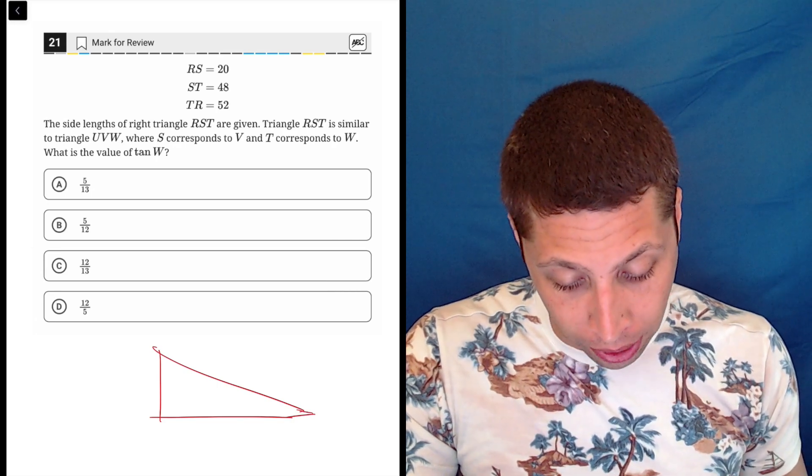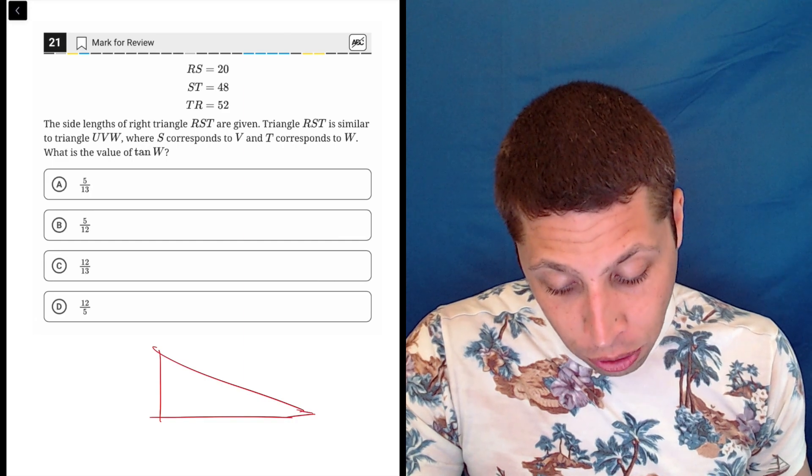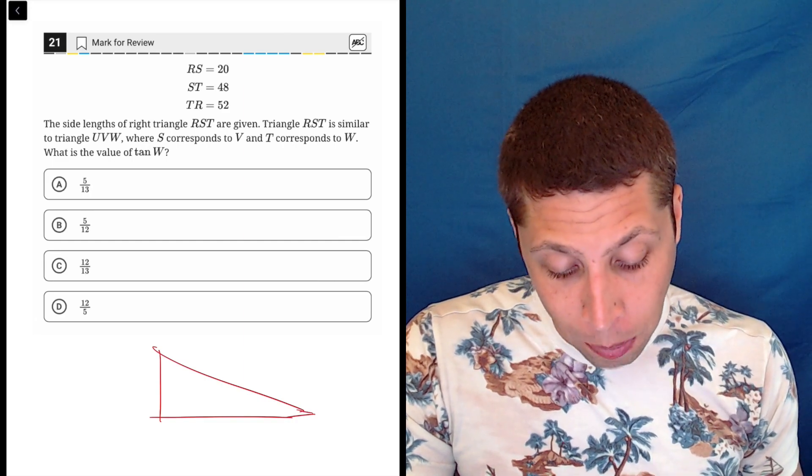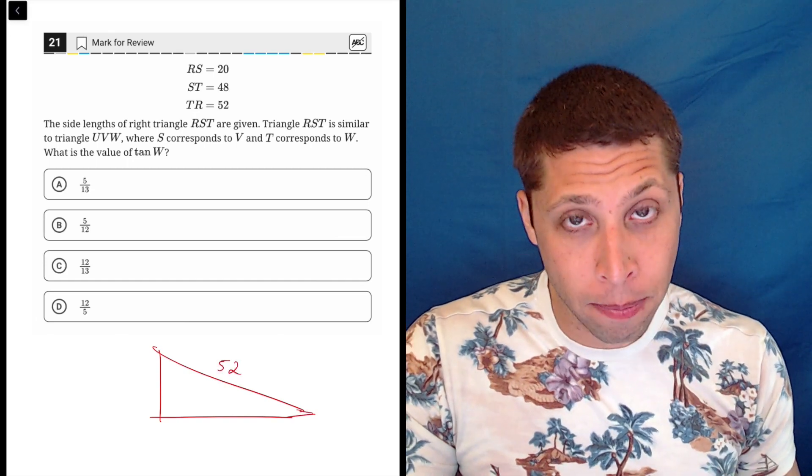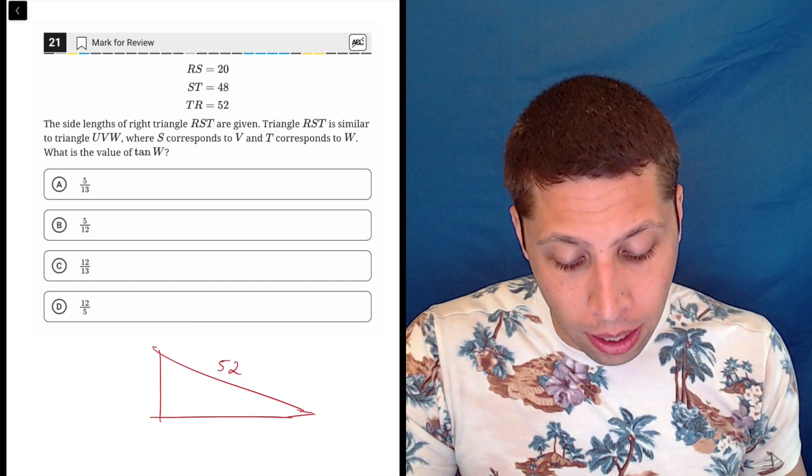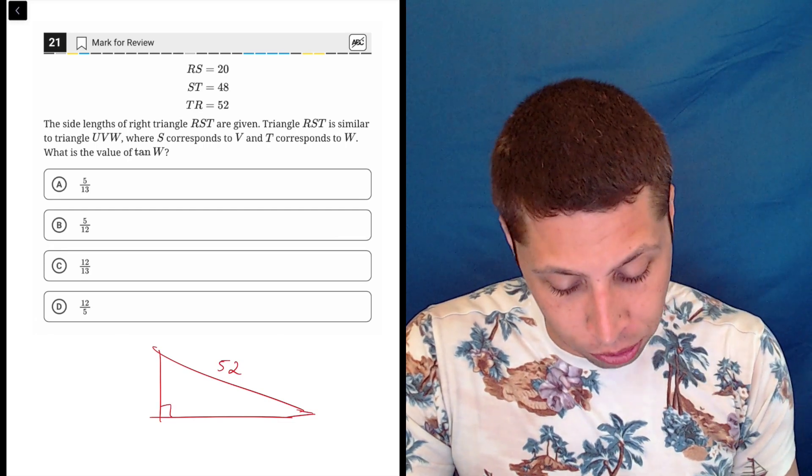We want to make sure we label things. So they're saying RS is 20, ST is 48, TR is 52. It's a right triangle, and just by definition, that means 52 has to be the big side because the biggest side is always the hypotenuse of the right triangle. So the right angle is here.